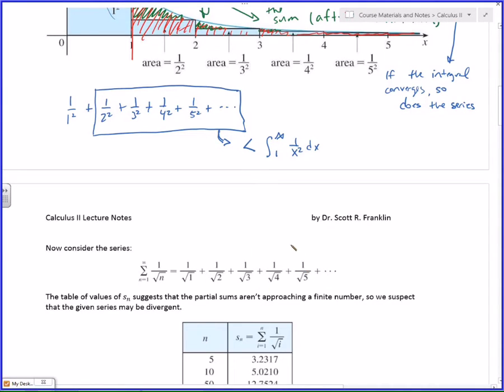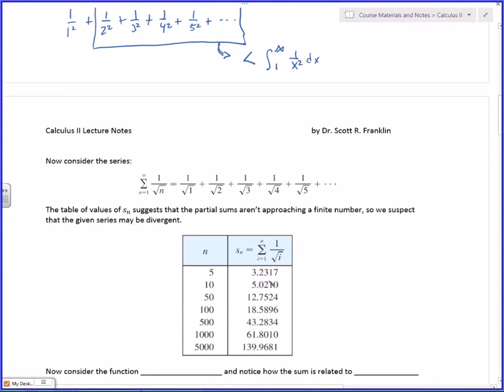So, I did the same thing with the table. And I plugged in the first five terms and added them up. So, I added up these together. Those five terms would be S sub 5. I get 3.2317. If I added up the first 10 terms, I got 5.0210.